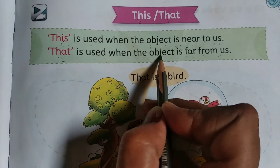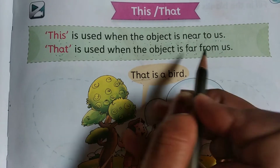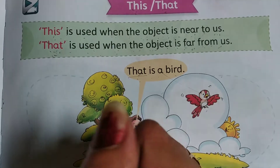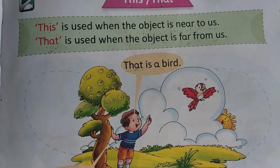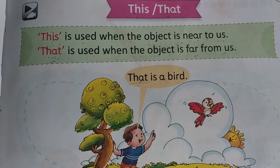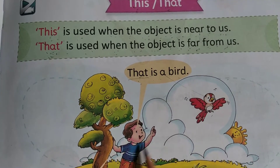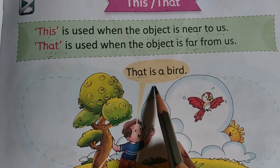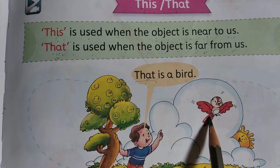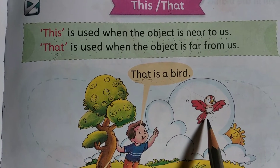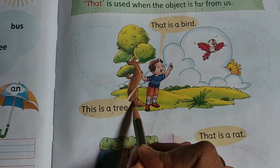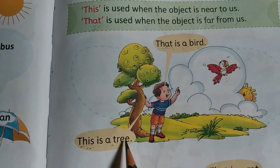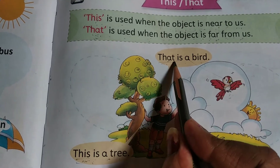'That' is used when the object is far from us. Jab object humse door hota hai to hum 'that' ka use karte hain. We use 'that' to talk about one person, place, animal or thing, but condition hai ki woh humse door ho — far from us. For example: 'That is a word' — this word is used because the word is far, we cannot touch it.